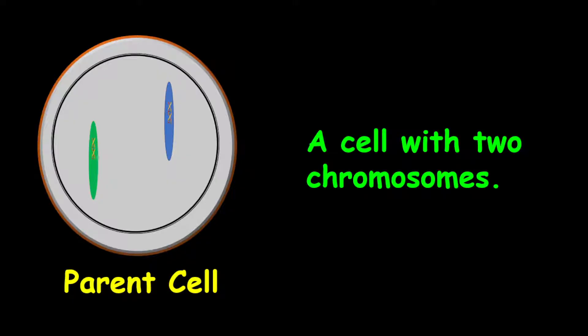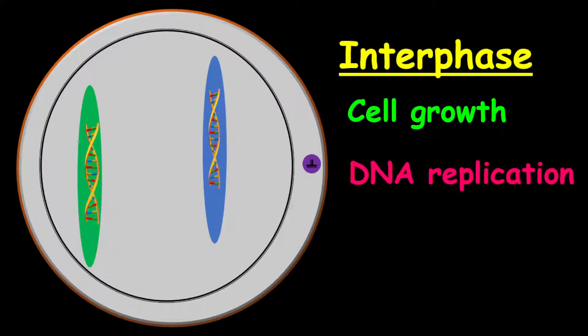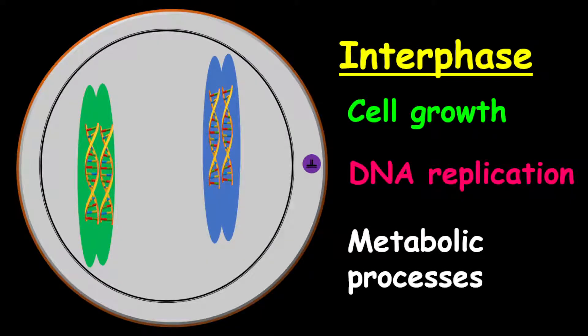Before a cell can divide, it will prepare itself for division. This phase is called the interphase. At this phase, the cell will grow, the DNA will replicate, and for this reason, you will have twice the number of chromatids, but the same number of chromosomes. Also, you will have regular metabolic processes taking place.